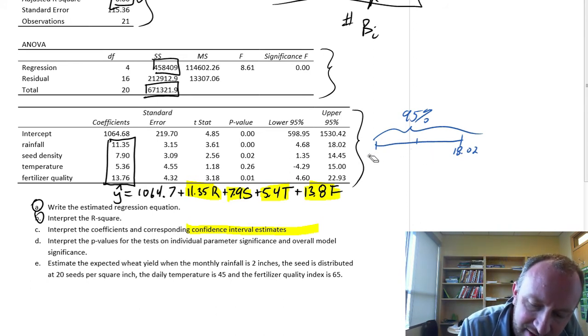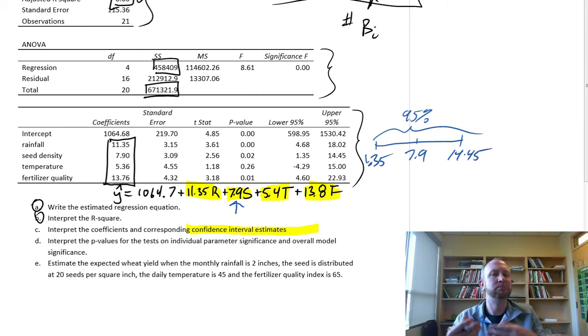If I look at the next one on seed density, our point estimate there was 7.9, that's our point estimate here, and I'm 95% confident that that's between 1.35 and 14.45. So for each additional seed per square inch, we are 95% confident that that will increase our average wheat yield by between 1.35 and 14.45 pounds.